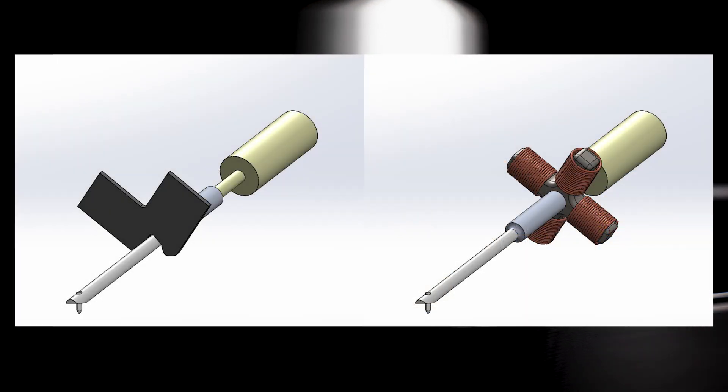The optical cartridge shares the same fundamental principles as typical MC or MM cartridges. Both the MC or MM cartridges and optical systems utilize the movement of the stylus and cantilever to produce an analog signal. The difference lies in the detection of the movement.